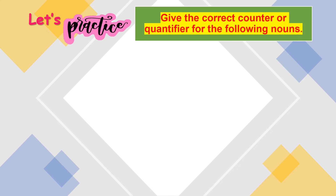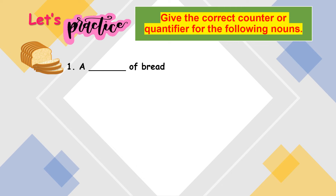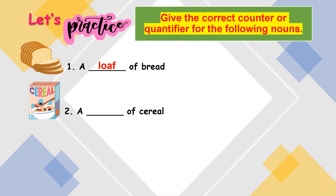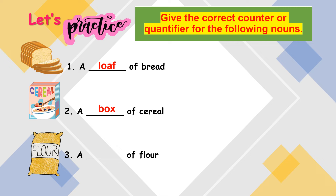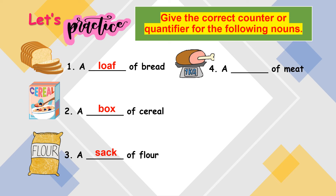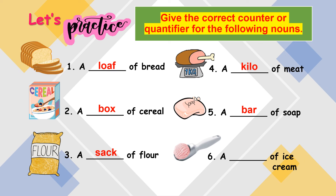Let's try another one. This time, give the correct counter or quantifier for the following nouns. The first one is a blank of bread — based on the picture, we say that this is a loaf of bread. How about this one? It is a box of cereal. Number three: a blank of flour — it is a sack of flour. Another one: a blank of meat — this one is a kilo of meat. A blank of soap is a bar of soap. And lastly, a blank of ice cream — based on the picture, is a scoop of ice cream. Well done, children!